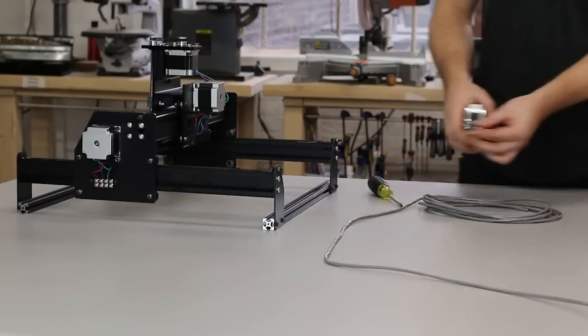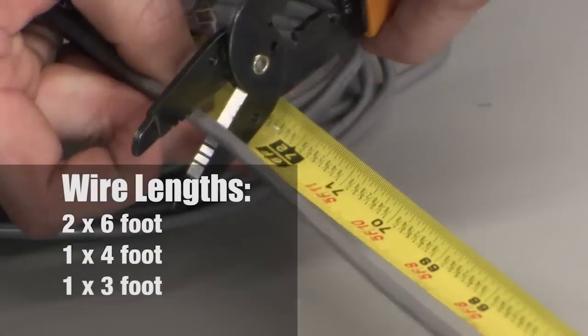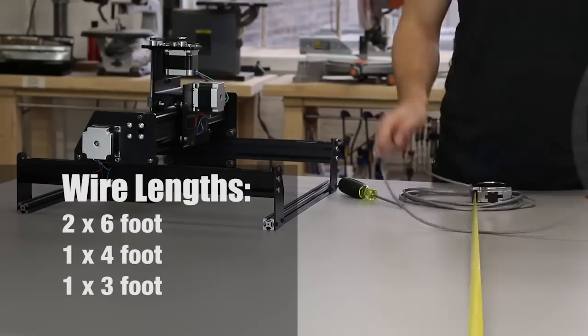Next, we'll cut the stepper cable that came with your X-carve kit. Cut two six-foot long pieces, one four-foot long piece, and one three-foot long piece.